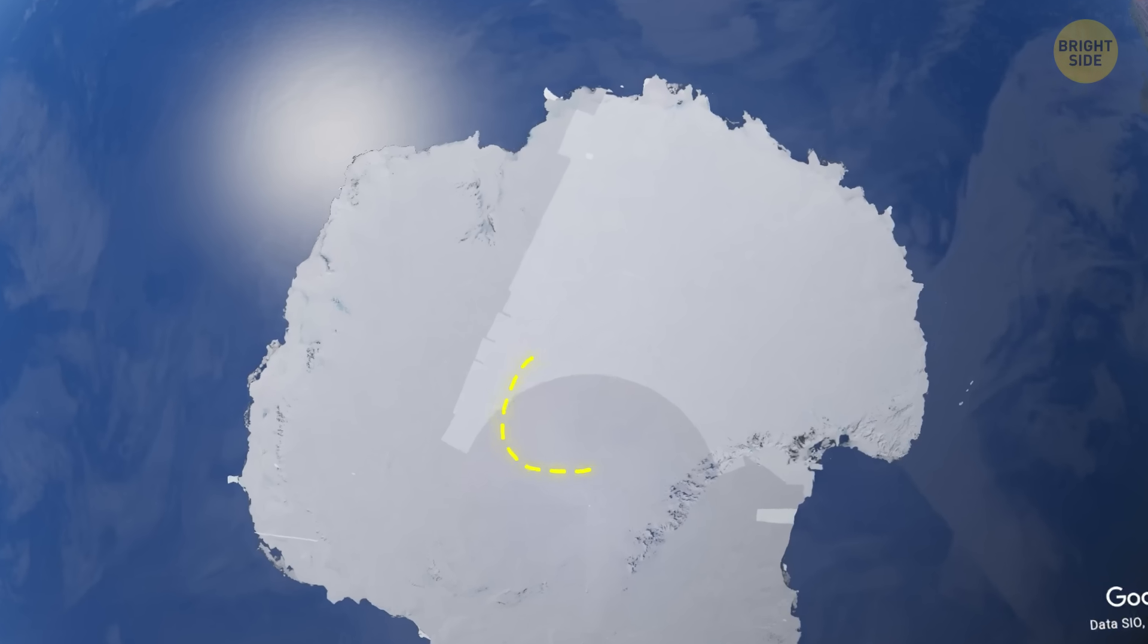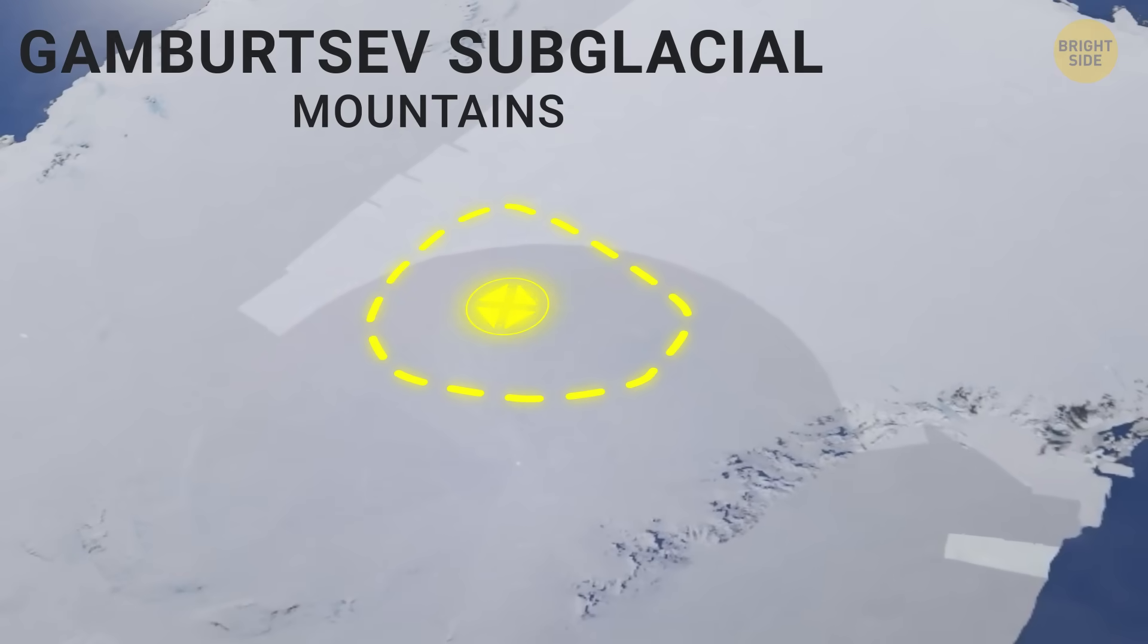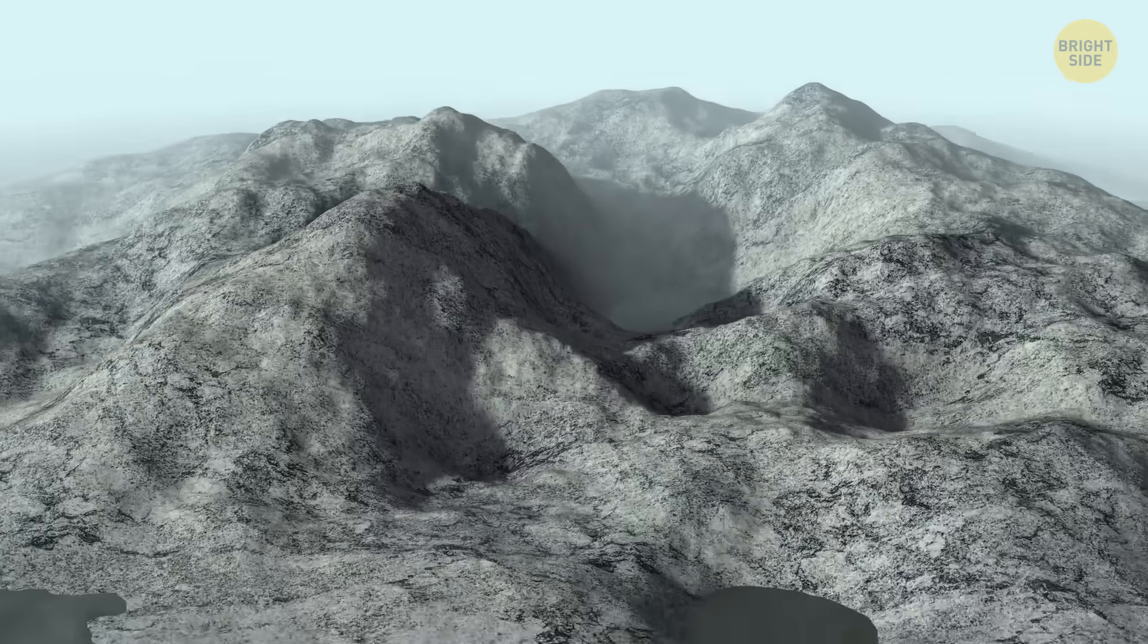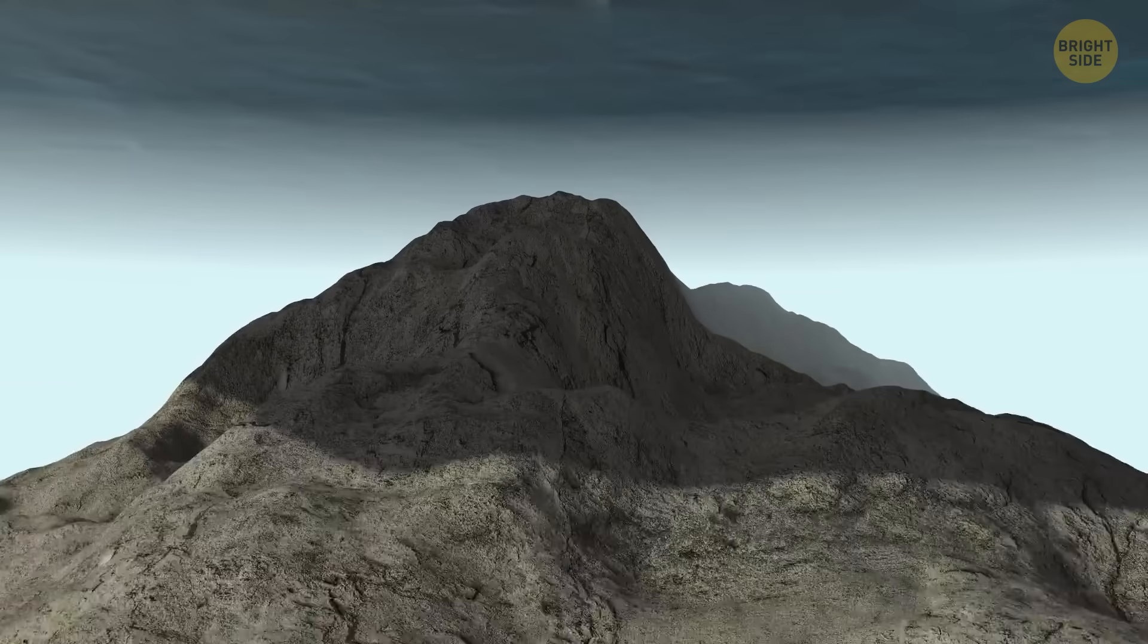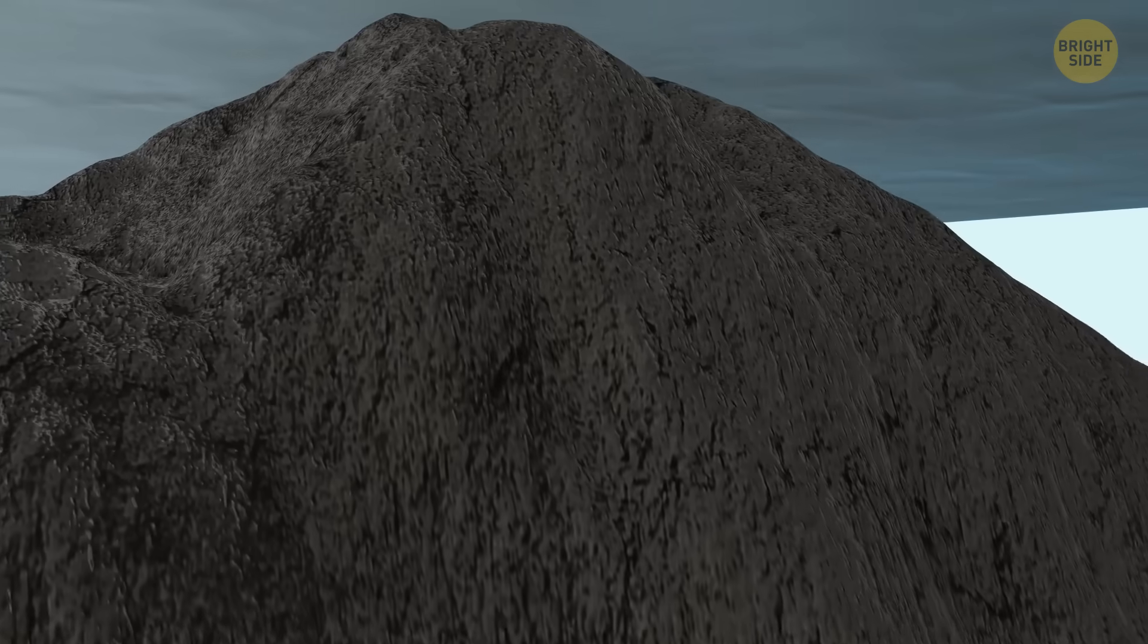This gigantic unexplored territory in Antarctica is called the Gamburtsev Subglacial Mountains, and the layer of ice above keeps this place untouched by nature and people. It's like a land inside another land, and it hides more than just mountains.